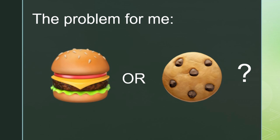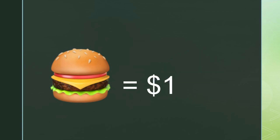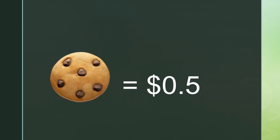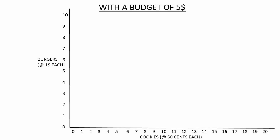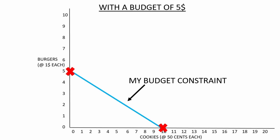We can show this problem on a simple graph. Let's say burgers cost $1 and cookies are $0.50 each. If I have $5, then I can buy 5 burgers or 10 cookies, or anywhere on this line between the two. This line is my budget constraint. I can buy anything on this line or any combination up to it. I could buy two burgers, two cookies, and keep $2, but I can't buy anything beyond this line.